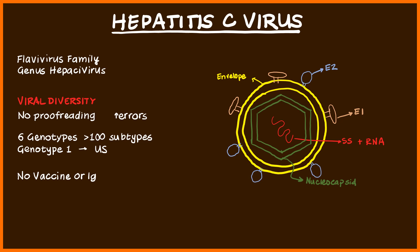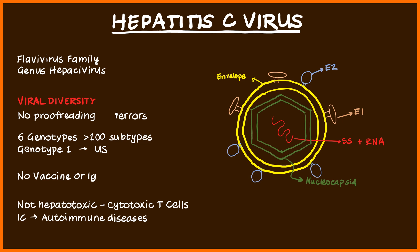Hepatitis C virus also has a very interesting pathogenesis. Although it infects the liver and causes liver disease, it's actually not hepatotoxic, meaning it doesn't kill the liver cell directly. What it does is trigger an immune response to release cytotoxic T cells, and these cytotoxic T cells create inflammation within the liver, which ends up killing the liver cell. So it's primarily an immune-mediated response. It can also lead to development of many immune complexes, which triggers a lot of autoimmune diseases, and this helps explain why hepatitis C is associated with so many autoimmune conditions outside of the liver.